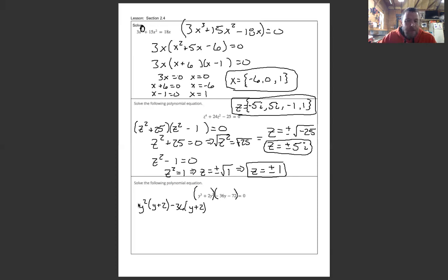So y plus 2. Because what can I pull out of this term and this term? Well, y plus 2. I can pull out y plus 2. So y plus 2. And then what's left? y squared minus 36. I can set that equal to 0. And again, I'm looking for y cubed. So that I'm looking for y and it's y cubed. So I'm looking for three answers.